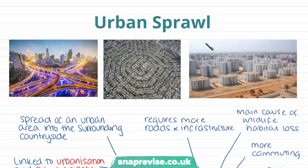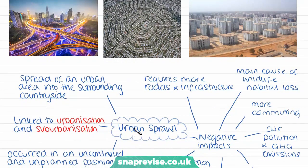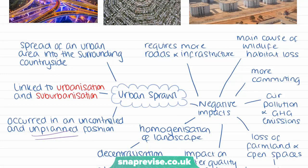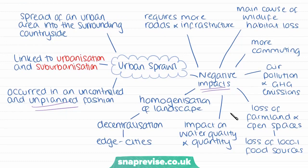So for the rest of the video, I'm going to be going through the key consequences of urbanisation and the characteristics of cities in the 21st century, starting with urban sprawl. Urban sprawl can be defined as the spread of an urban area into the surrounding countryside. It's been linked to the processes of urbanisation and suburbanisation, and has traditionally happened in an uncontrolled and unplanned fashion. This uncontrolled expansion requires more roads and infrastructure, such as pipes, cables and electricity wires.